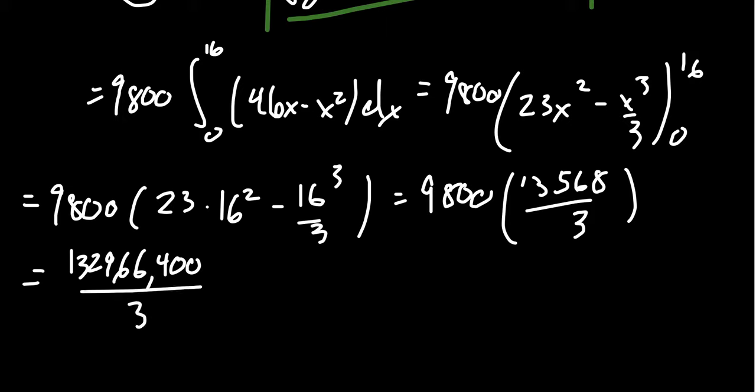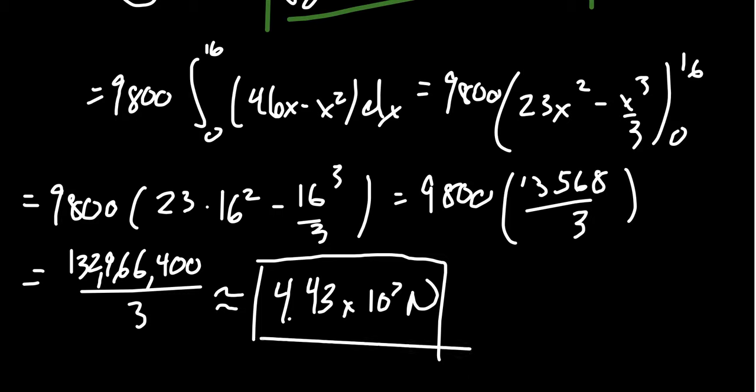Put in some commas there. You get 132,966,400 over 3. But again, a rounded answer, if we pay the significant digits, that's sort of a big thing in most science classes. I don't really care about that in a mathematics class. But we're going to get that the force is going to be 4.43 times 10 to the 7th Newtons. And we could upgrade this to kilonewtons or meganewtons if we wanted to. But this is our answer.